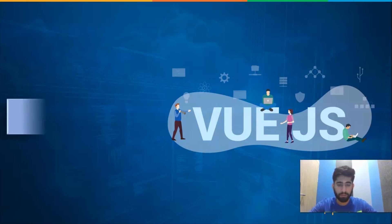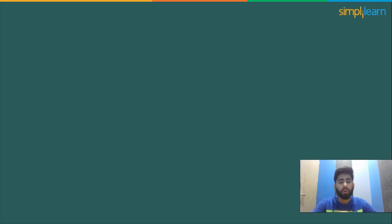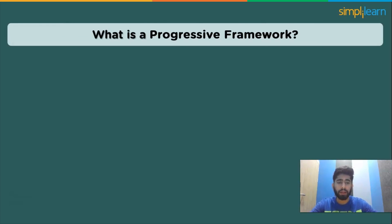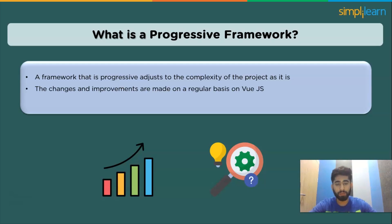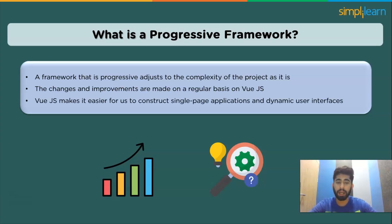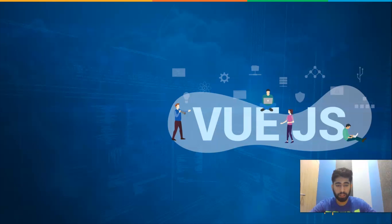Now let's see what is a progressive framework. The meaning of progressive here is that the framework is used in addition to HTML markup — it is a data model connected to a template model. A progressive framework adds to the complexity of a project as needed, with changes and improvements made regularly. Vue.js makes it easier for us to construct single-page applications and dynamic user interfaces.